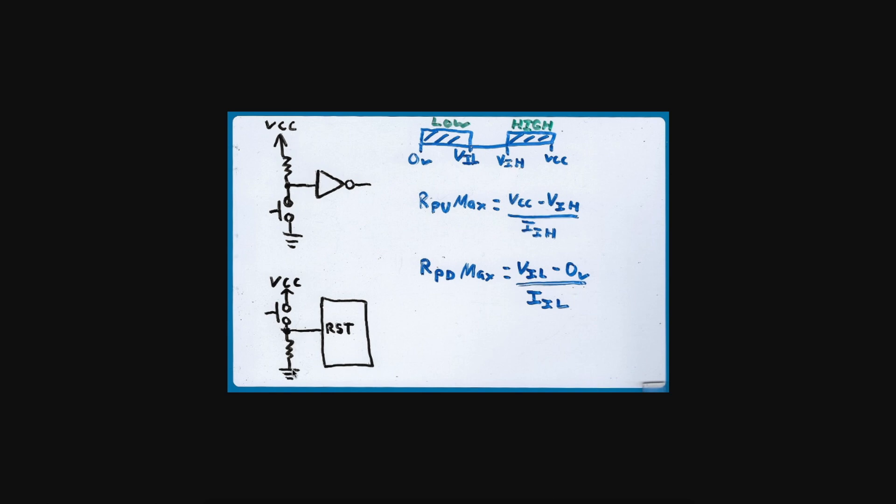One example where you would need a pull-down with a switch to VCC would be if you have a chip that has an active high reset pin and you want to be able to push the button to reset the chip.